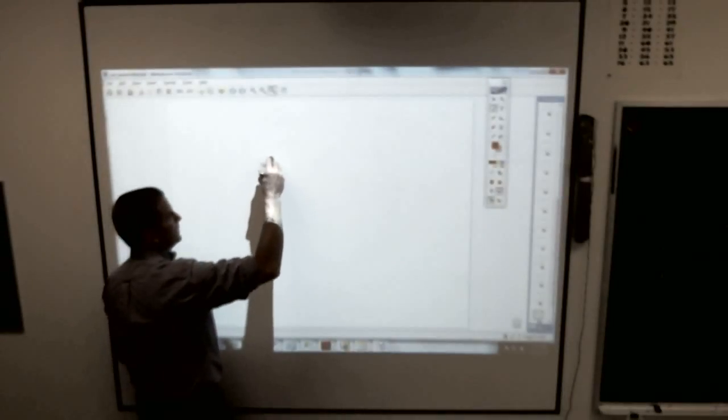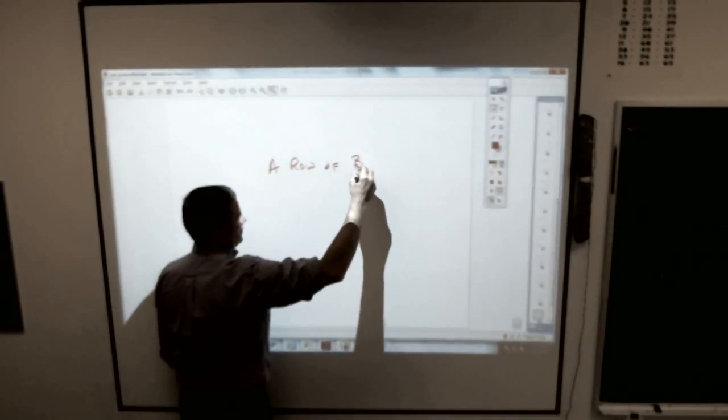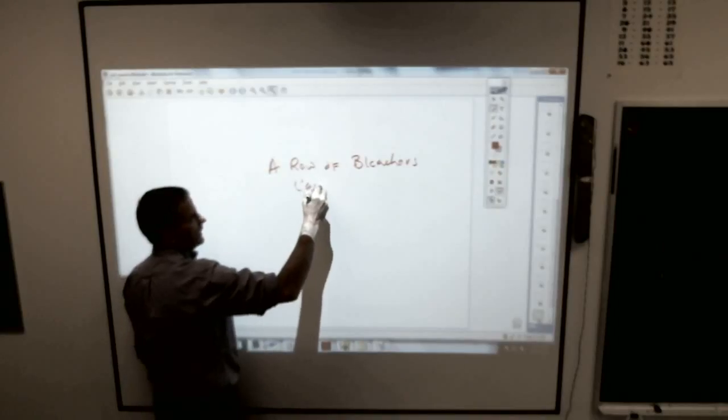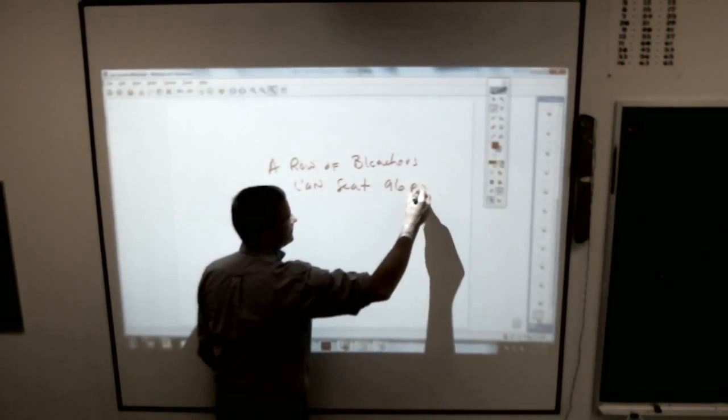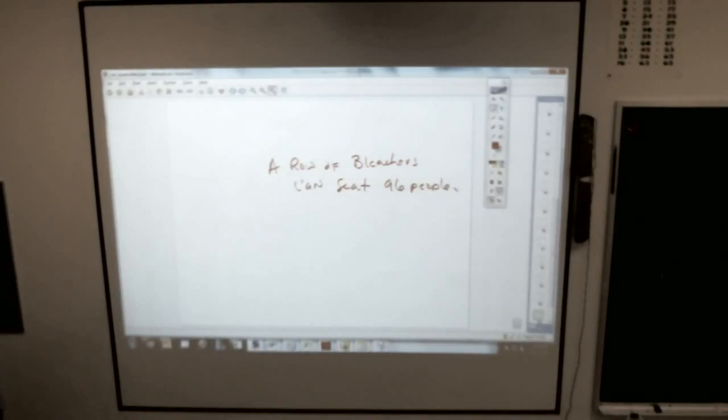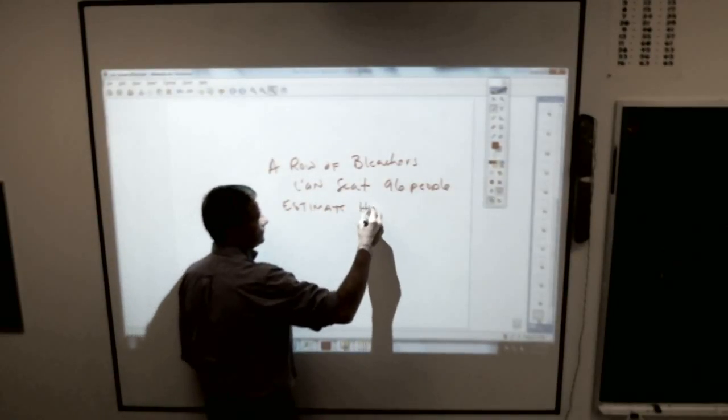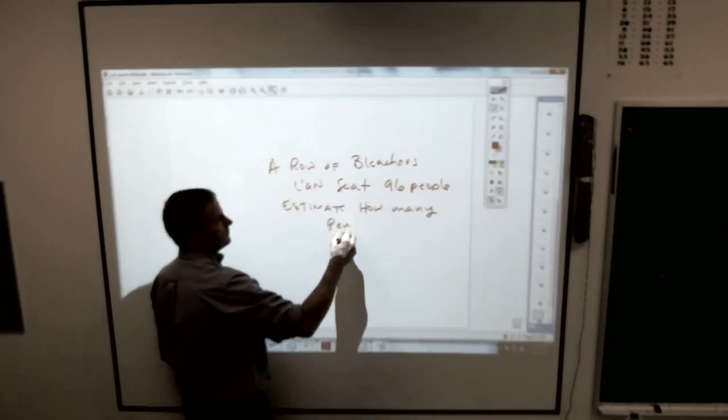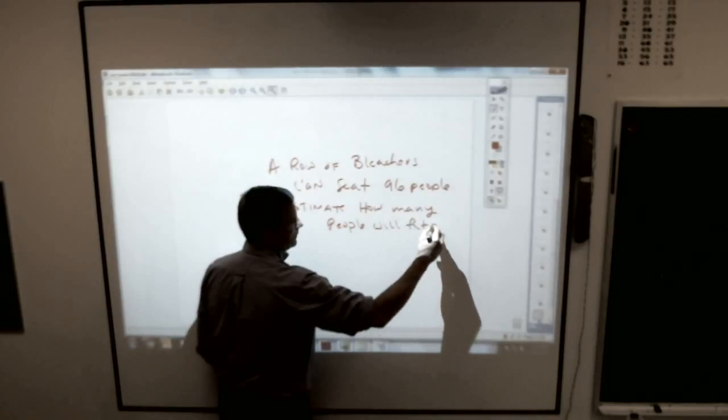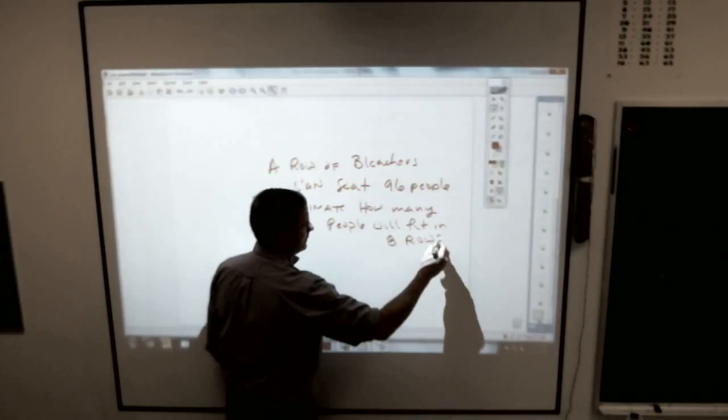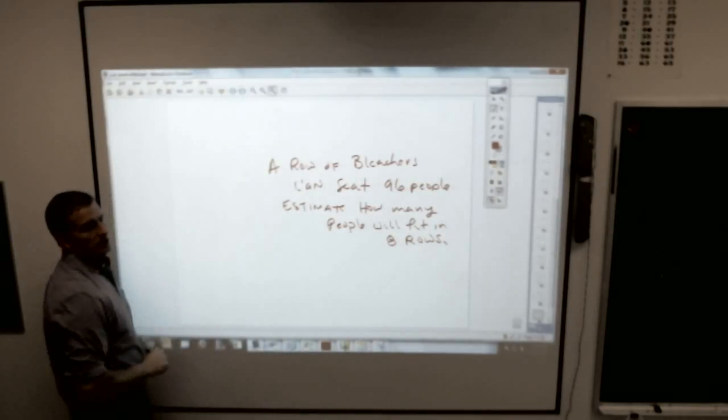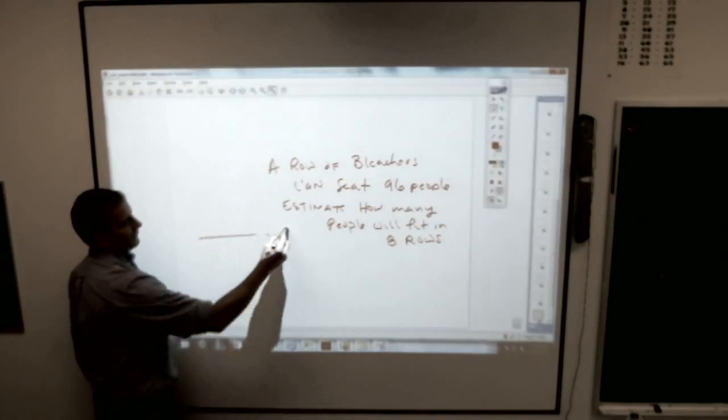Another example. Here's one. Write this problem down. A row of bleachers can seat 96 people. If you have eight rows, estimate how many people will fit in eight rows? And it's a story problem, so it's probably good to draw something down. But notice it says to estimate.